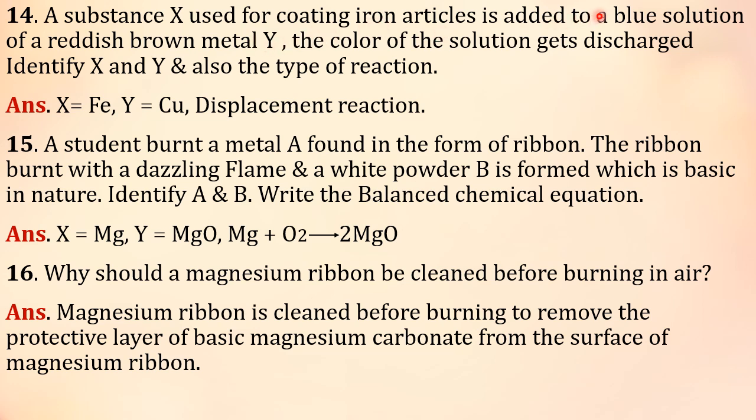This zinc is added to a blue solution of a reddish brown metal Y. Blue solution is copper sulfate. So this is blue solution of reddish brown metal Y. This metal is copper. So copper, copper sulfate is a blue color. Copper is reddish brown. Its salt solution copper sulfate is blue color. So here he is adding zinc to blue colored copper sulfate. When we add zinc to blue colored copper sulfate, what is the reaction? Zinc is more reactive than copper, so zinc displaces the copper to give zinc sulfate and the copper is made free. So the color of the zinc sulfate is colorless. So therefore, earlier before the action it was blue color, no color is discharged. No color. That is the answer. So X is zinc, Y is the metal copper. Type of the reaction is displacement reaction.